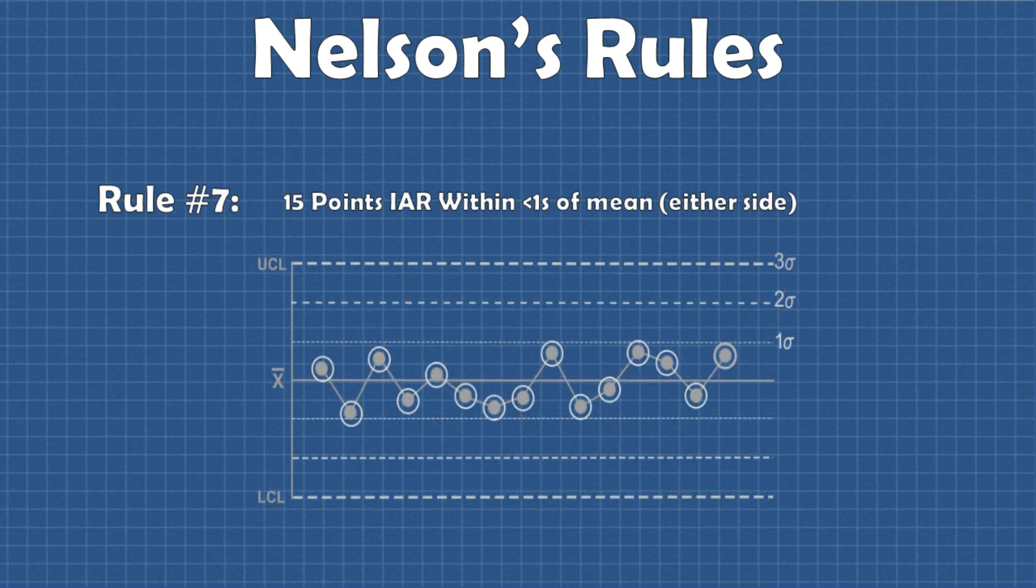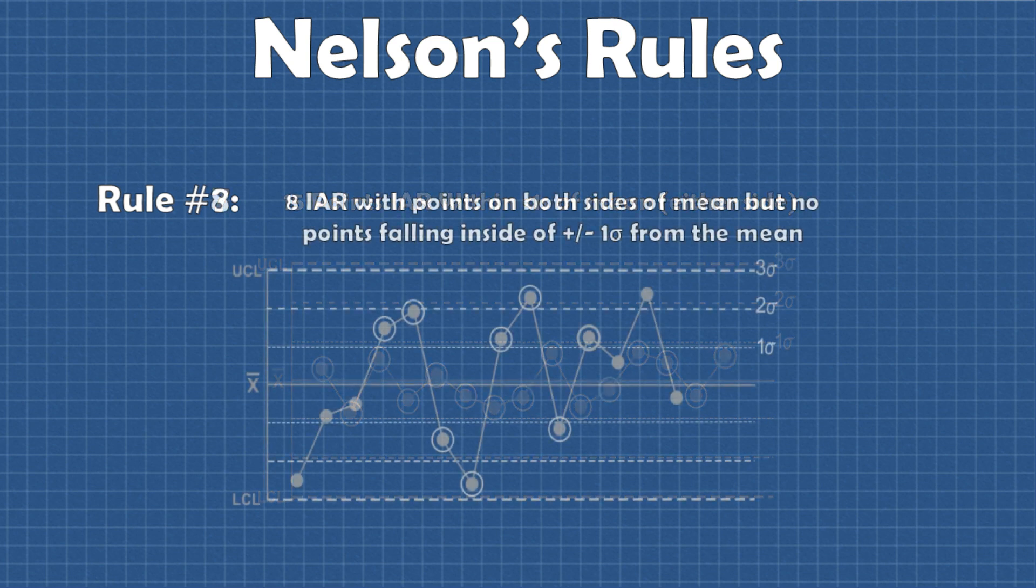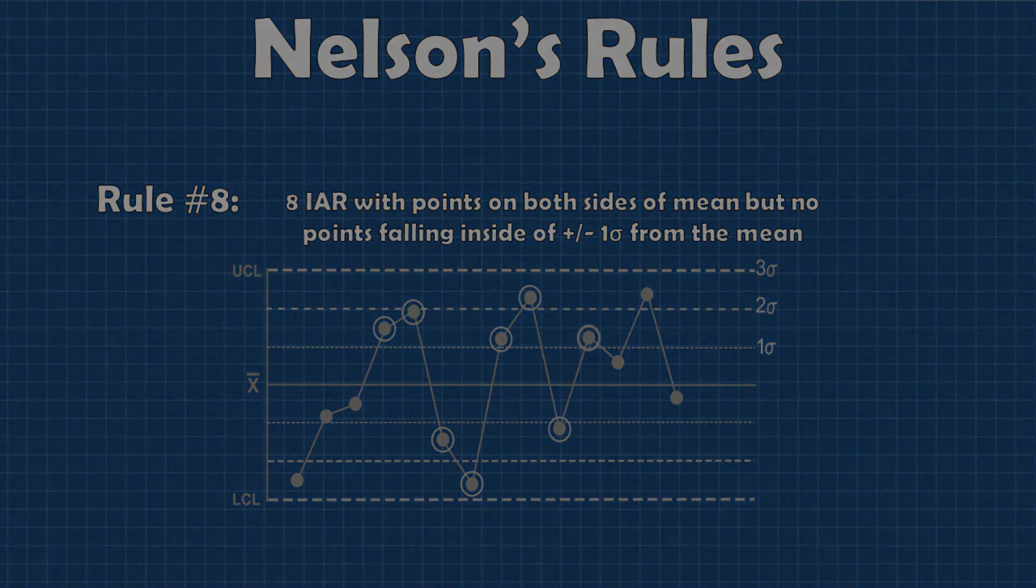Again those are looking to see if two out of three points are greater than two standard deviations from the mean and if four out of five points are greater than one standard deviation from the mean. Nelson's seventh rule is a test to see if fifteen data points in a row are within one standard deviation from the mean on either side.